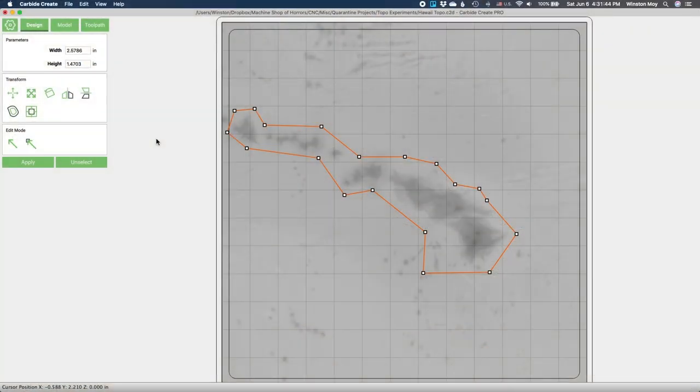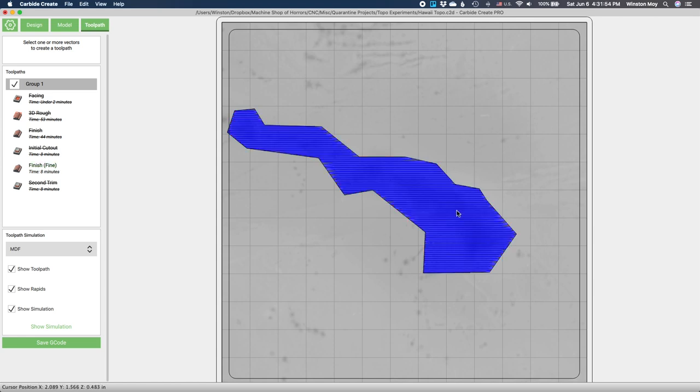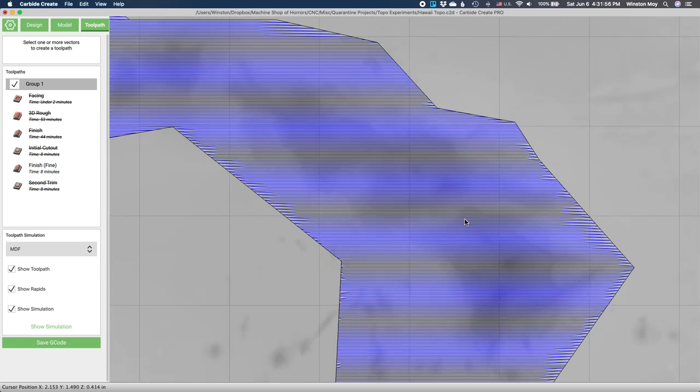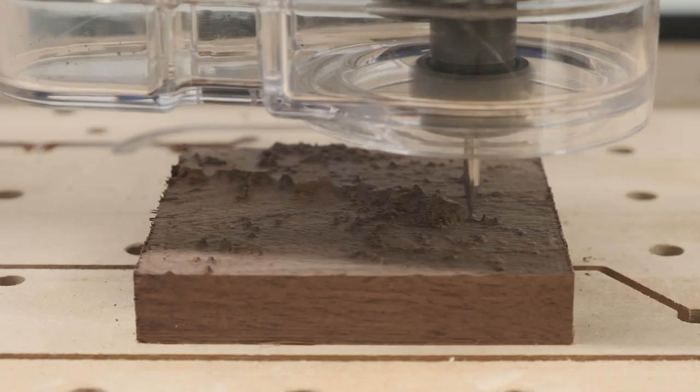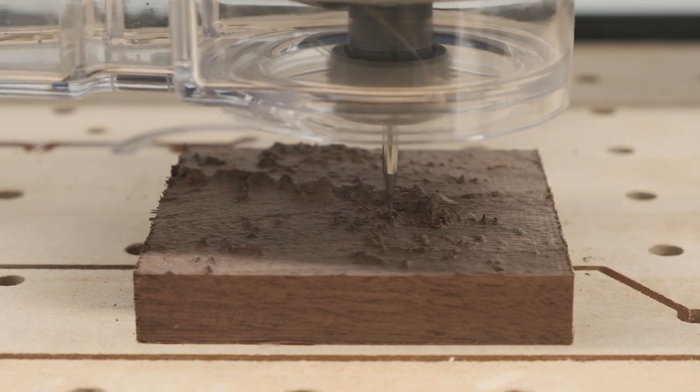So I sketched a polygonal region around the island chain just to be hit with a finishing toolpath using a 1/32 inch ball endmill and a super tiny stepover of just a few thousandths of an inch. This tightly restricted toolpath gave me maximum detail where it mattered in just a couple minutes.